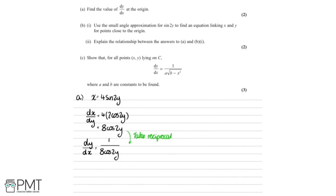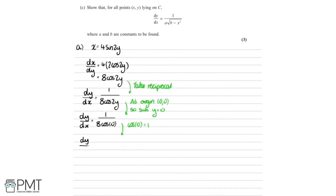Now we need to find the value of dy by dx at the origin. At the origin, x equals 0 and y equals 0. So we sub y equals 0, giving dy by dx equals 1 over 8 cos of 2 times 0, which is 1 over 8 cos 0. The cos of 0 equals 1, therefore dy by dx at the origin equals 1 over 8.